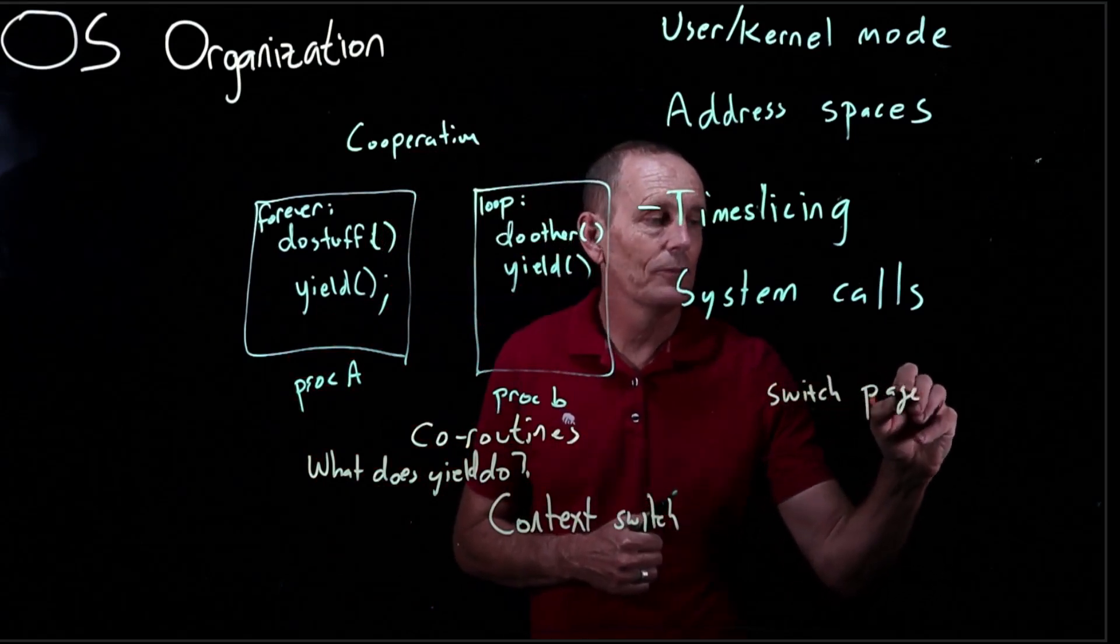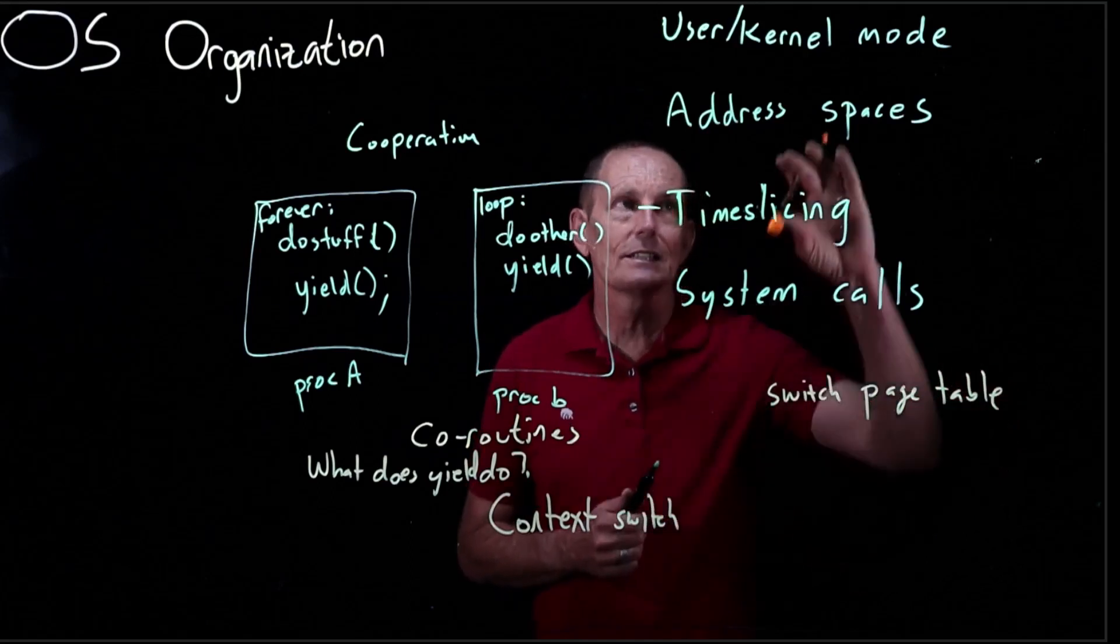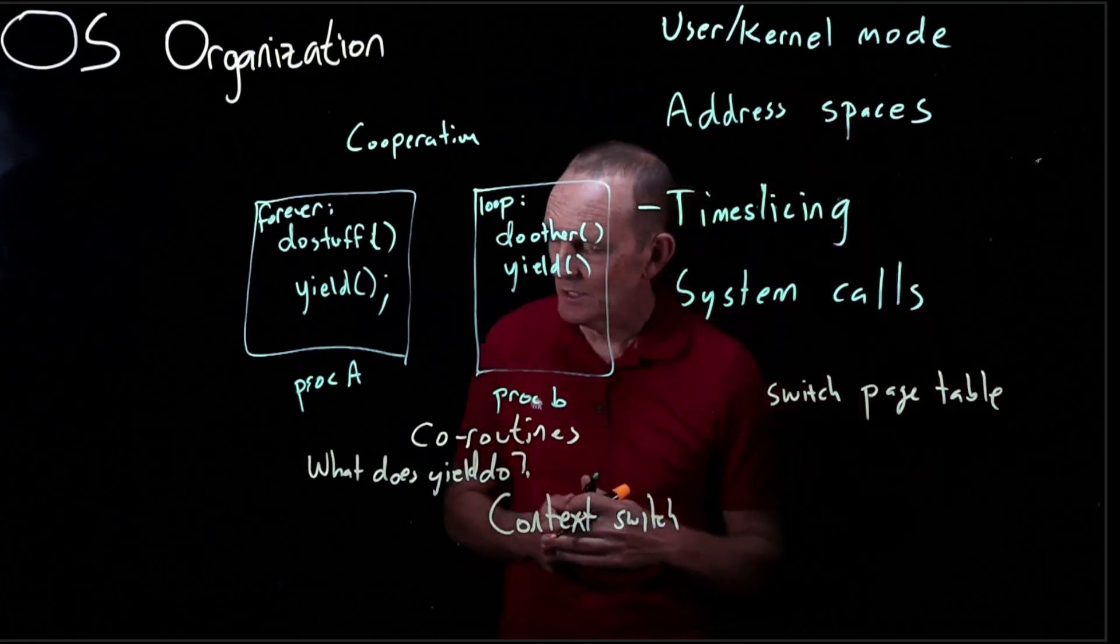We're going to switch the page table. Alright and that's how we get our isolation of address spaces. And what else are we going to switch?